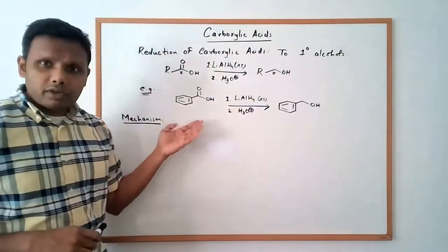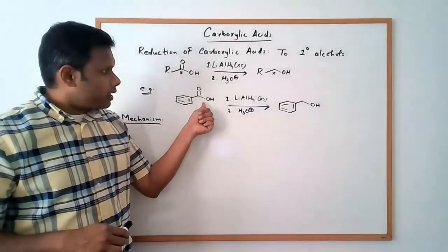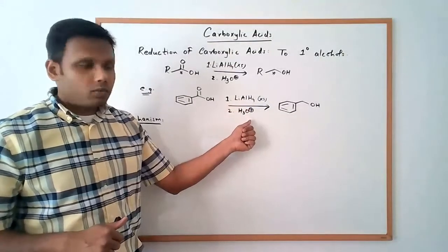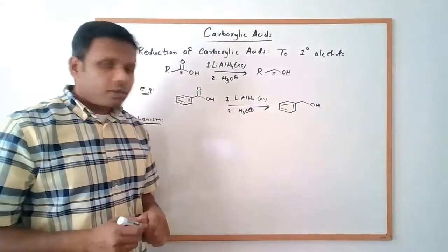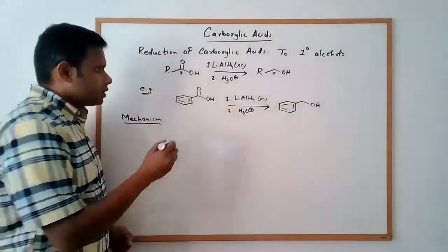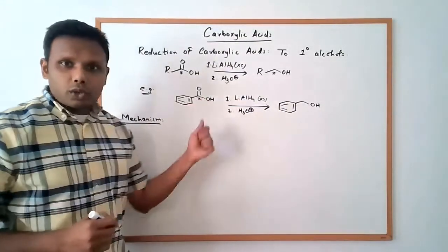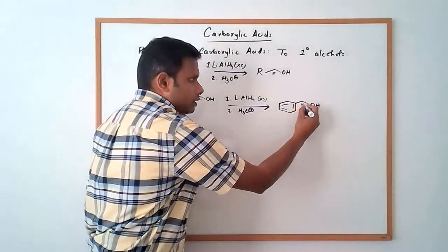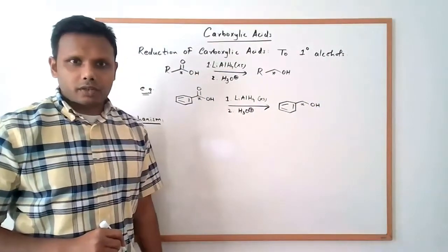As an example, the reduction of benzoic acid: benzoic acid with excess lithium aluminum hydride followed by an acidic workup will convert into benzyl alcohol — that's the primary alcohol corresponding to benzoic acid. Notice how the carbon that belonged to the carboxylic acid is now the alpha carbon in the primary alcohol.